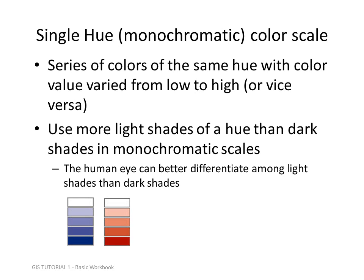Here are more details about a single-hue or monochromatic color scale: a series of colors of the same hue with color value varied from low to high or high to low. Use more light shades of a hue than dark shades in a monochromatic scale, as the eye can better differentiate among light shades than among dark shades. Notice that the darkest hue in both examples is actually not that dark if you look at the values — the variations in the lighter colors come out better.